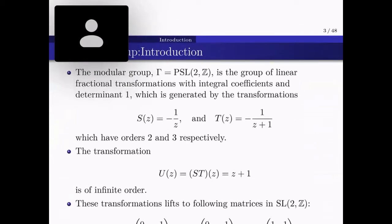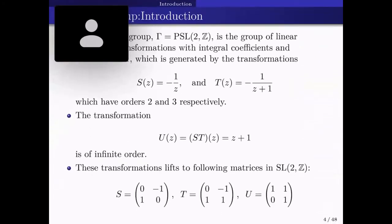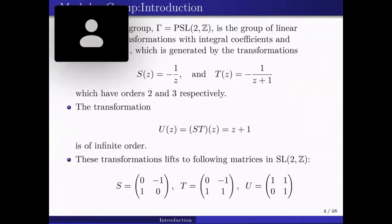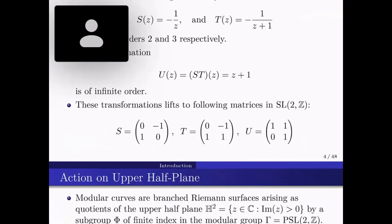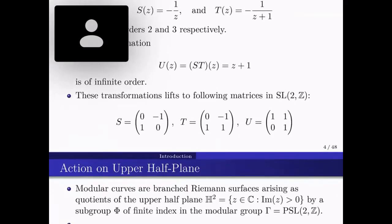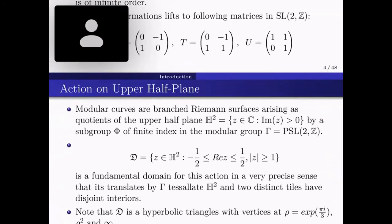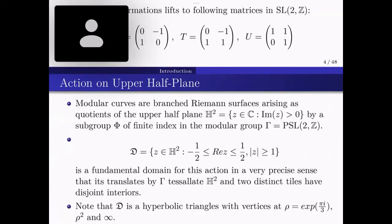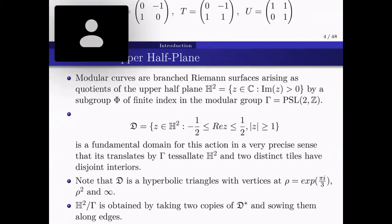The modular group is a group of Möbius transformations with integer coefficients and determinant one, generated by two elements of order two and three. Combining these elements gives another element of infinite order. The covering group SL₂(ℤ) consists of the corresponding matrices. We study this group by acting it on the upper half plane, and the quotient spaces obtained are known as modular curves — Riemann surfaces arising as quotients of the upper half plane by finite-index subgroups of the modular group.